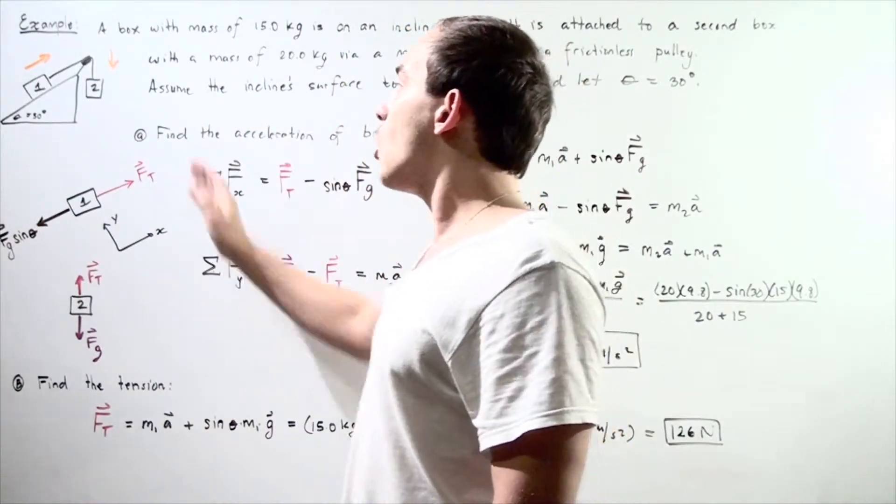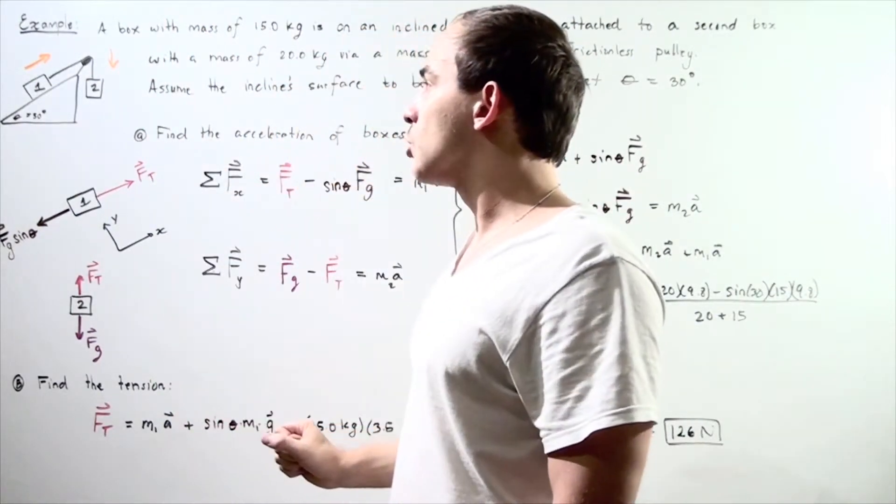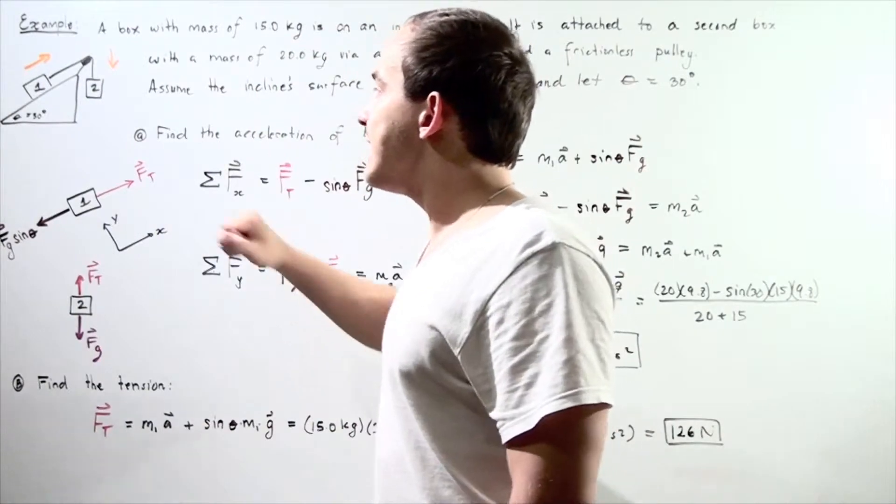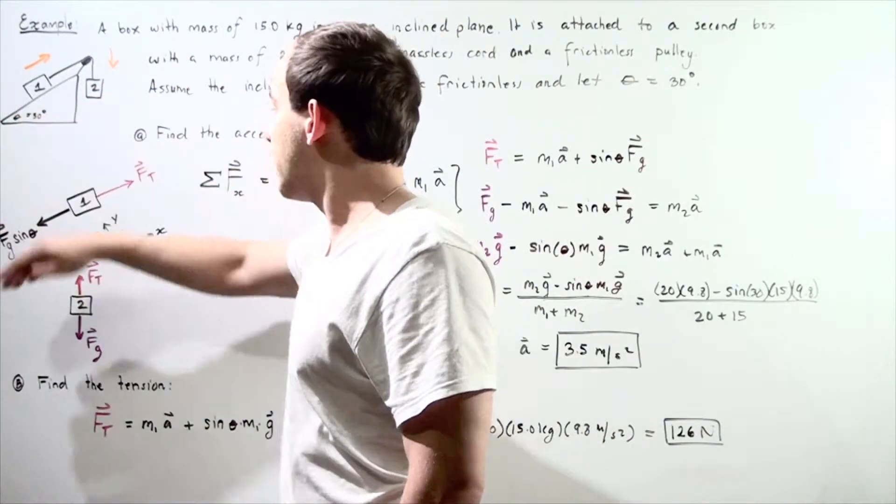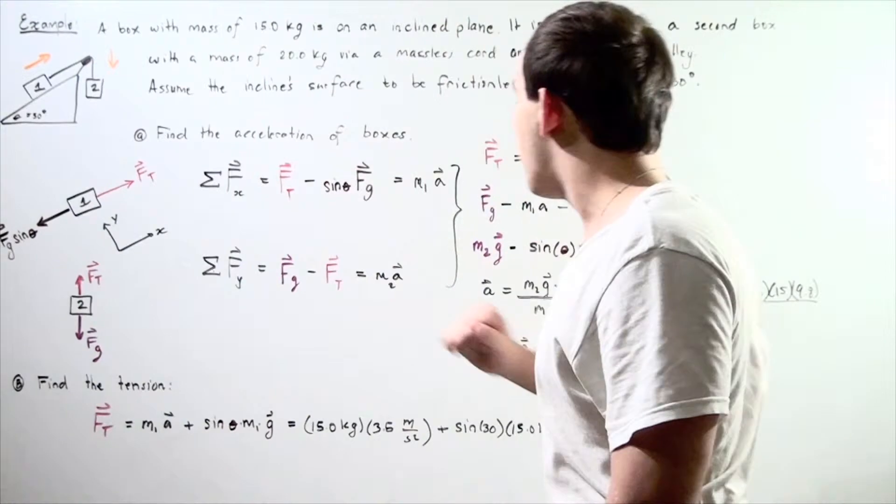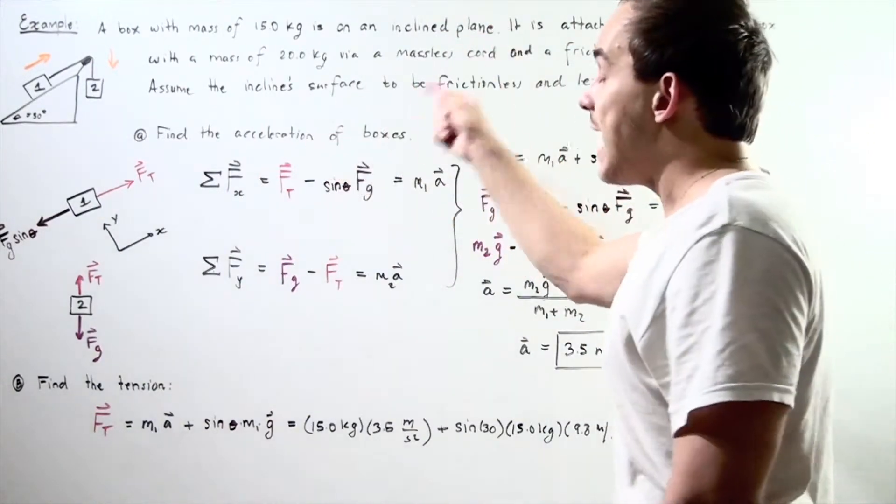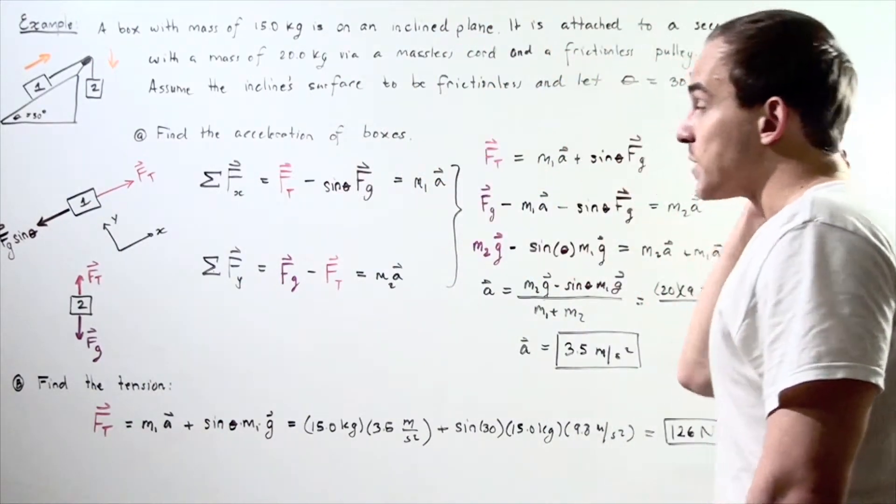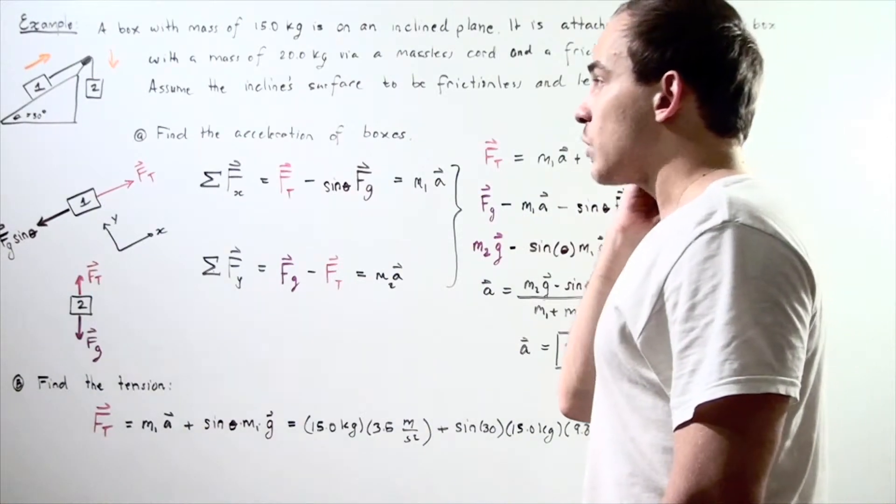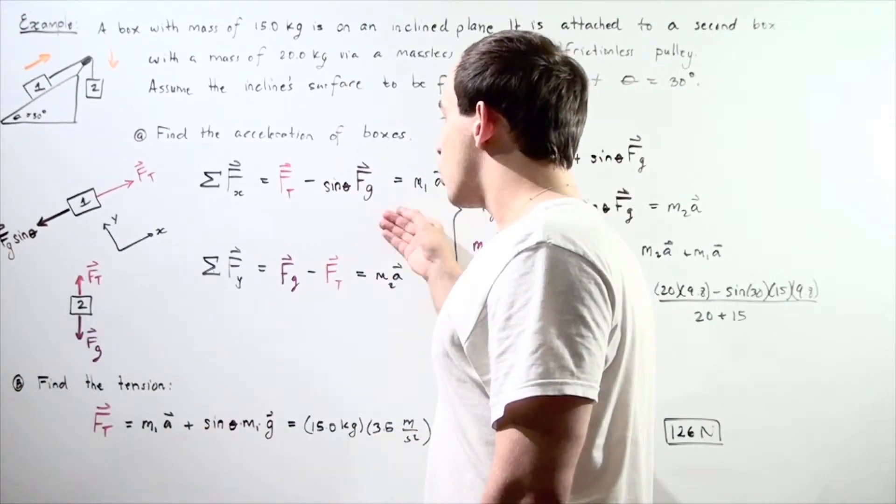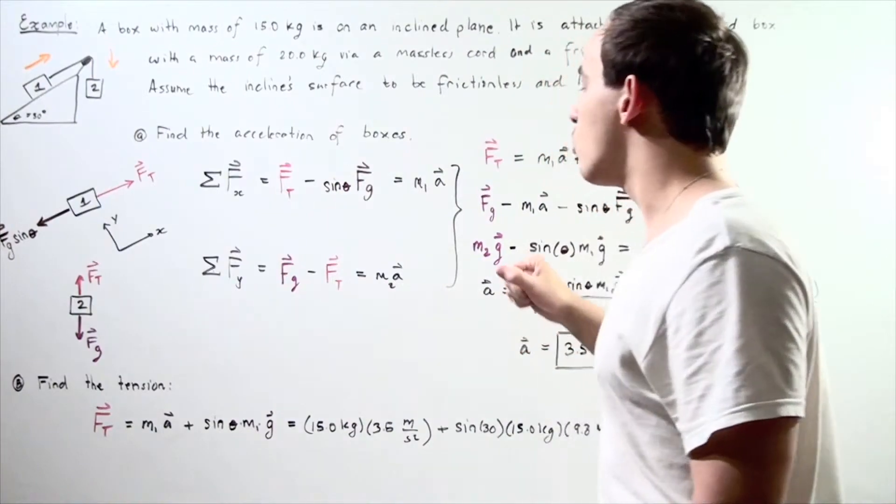Box number two is going downward, vertically downward, while box number one is traveling along our inclined plane along the x axis in the positive direction as chosen previously. Now that we know our acceleration, we can use one of these equations to solve for our tension in the rope.